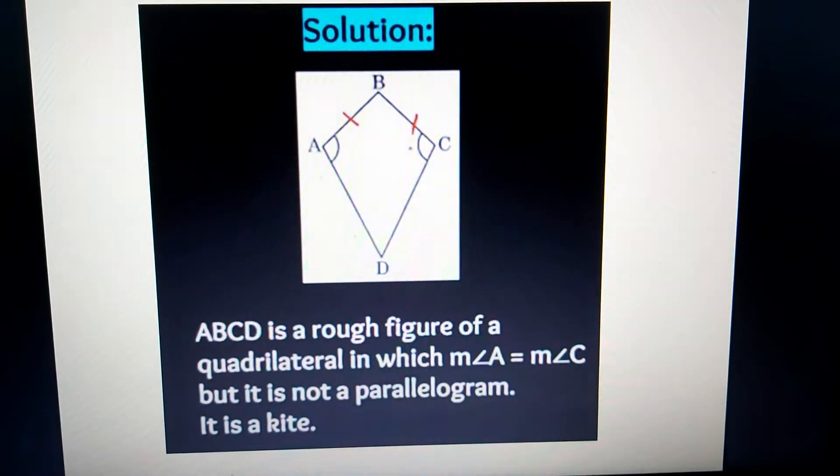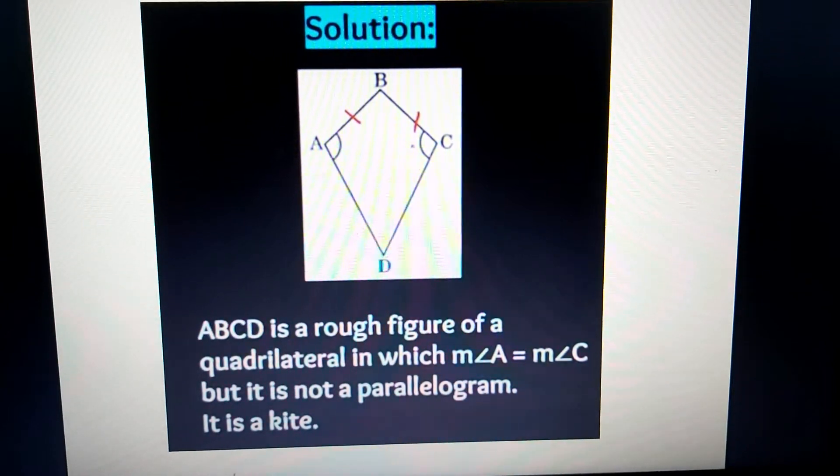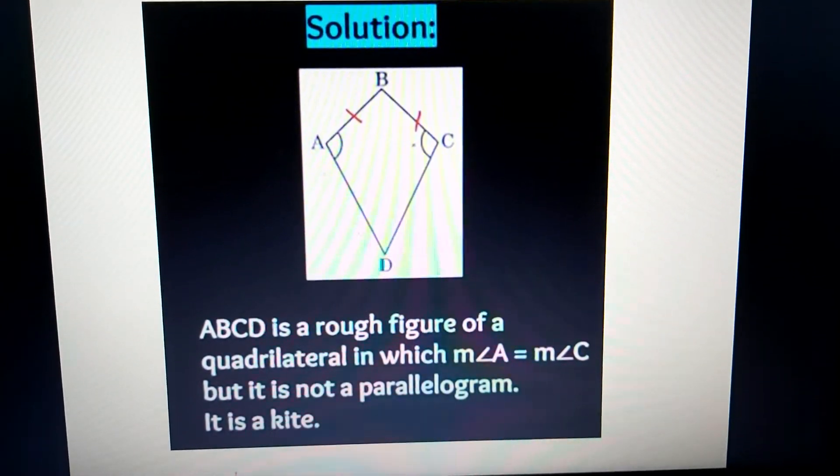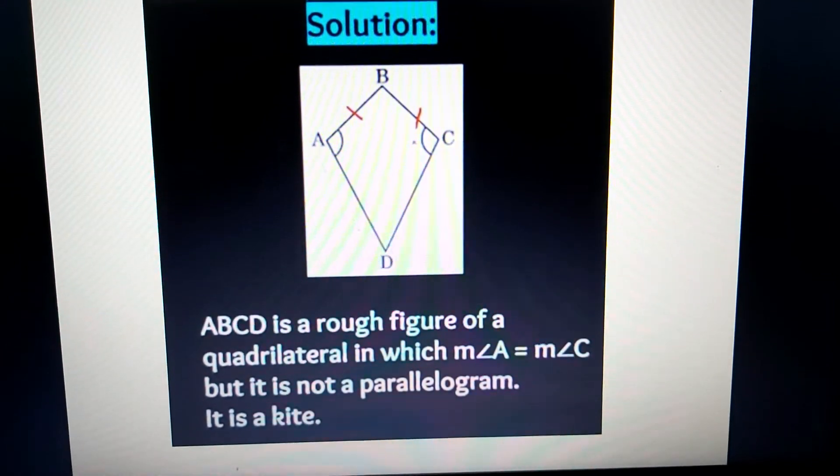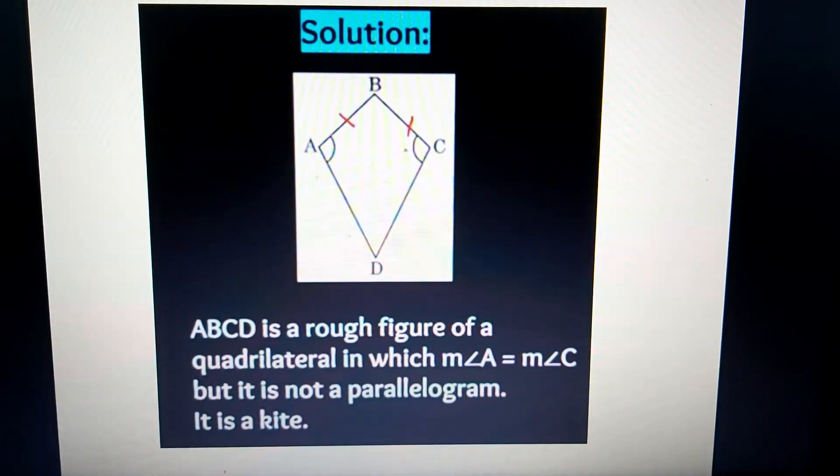So we have only one pair of equal angles, and that is why kite is the right answer. In a kite, only one pair of equal angles is there. So that is the solution.